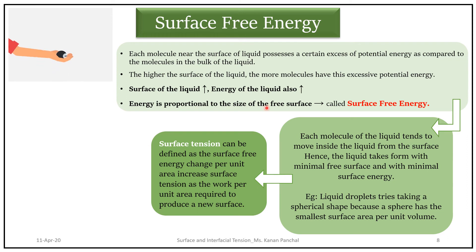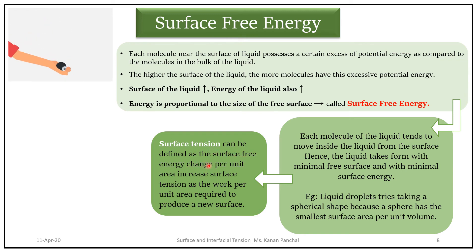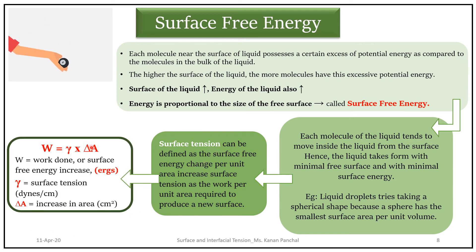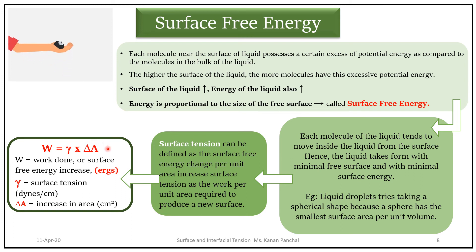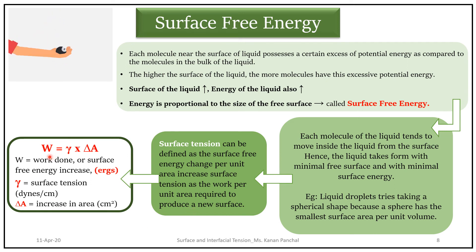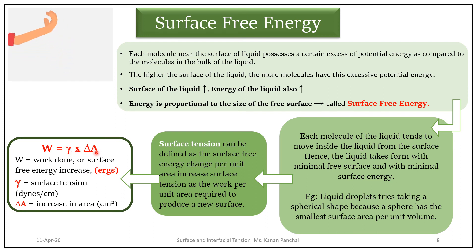Surface tension can also be defined with respect to surface free energy as the surface free energy change per unit area — that is, W divided by delta A — the work per unit area required to produce a new surface. Here, W is the work done or the surface free energy increase, given in Ergs. Gamma is the surface tension and delta A is the increase in area.